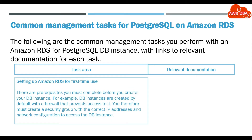Setting up Amazon RDS for first-time use. There are prerequisites you must complete before you create your DB instance. For example, DB instances are created by default with a firewall that prevents access to it. You therefore must create a security group with the correct IP addresses and network configuration to access the DB instance. See: Setting up for Amazon RDS.